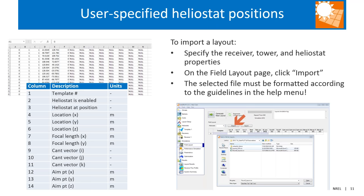If you choose not to use the automatic layout algorithm, you can import your own layout — useful if you're developing a particular site and want SolarPILOT for third-party validation. On the field layout page there's an import button. The import requires up to 14 columns in a CSV file; the first five or six are mandatory and the remaining can be left blank if you want the tool to calculate those values.